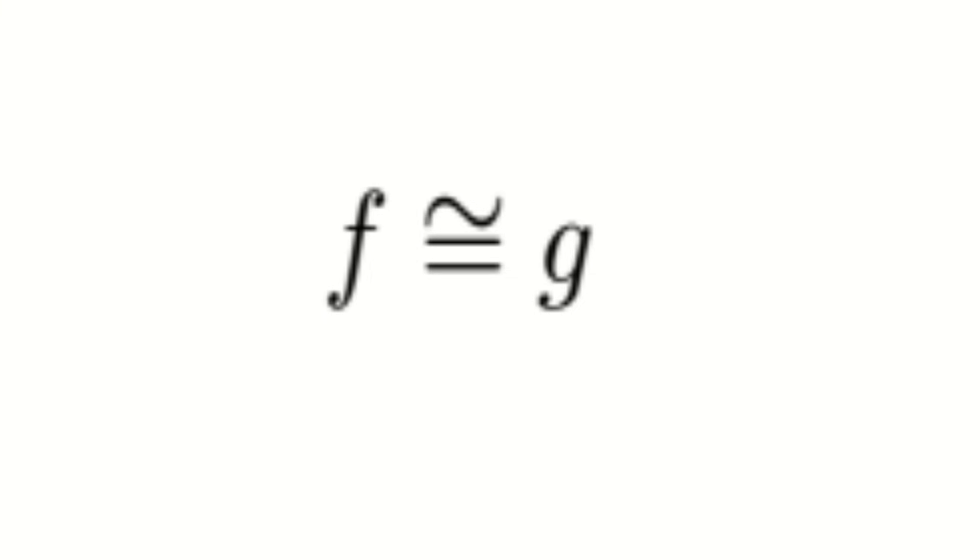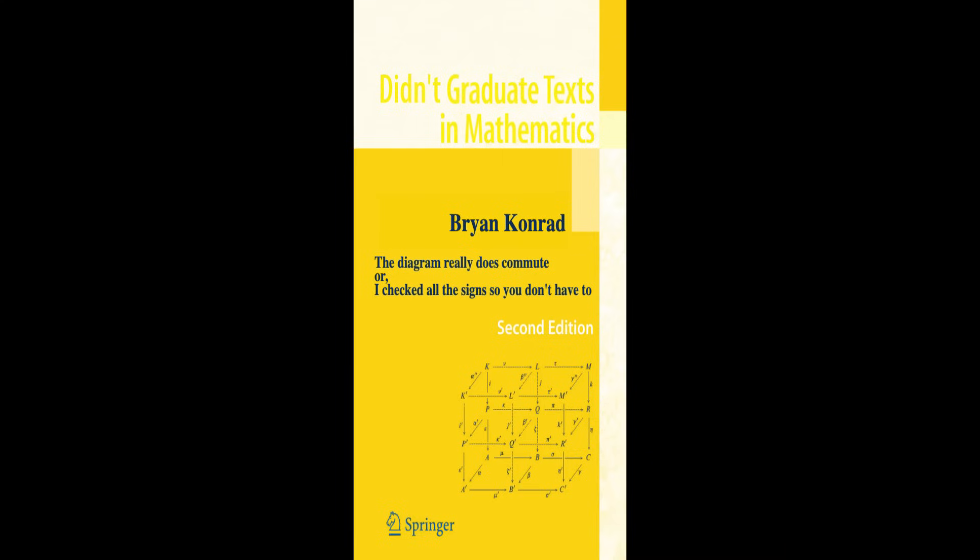When we can continuously morph one function into the other over time, then we say that the functions are homotopic. When two continuous functions are homotopic, we can consider them to be the same function, in a sense.